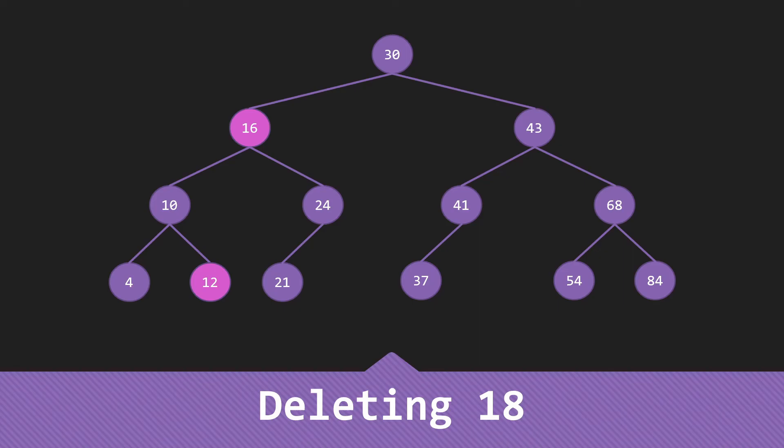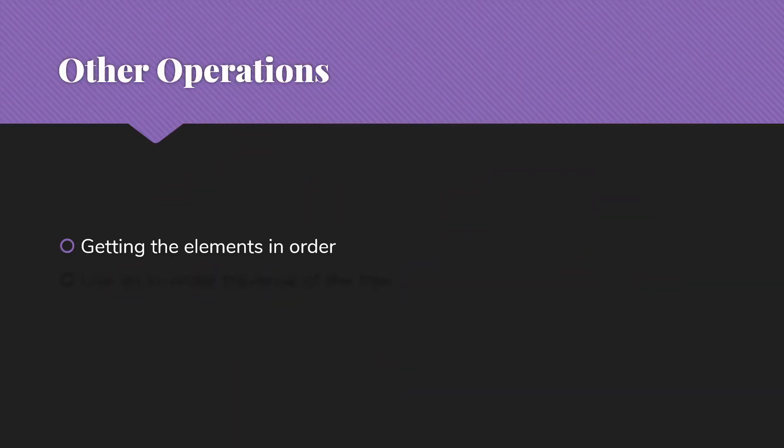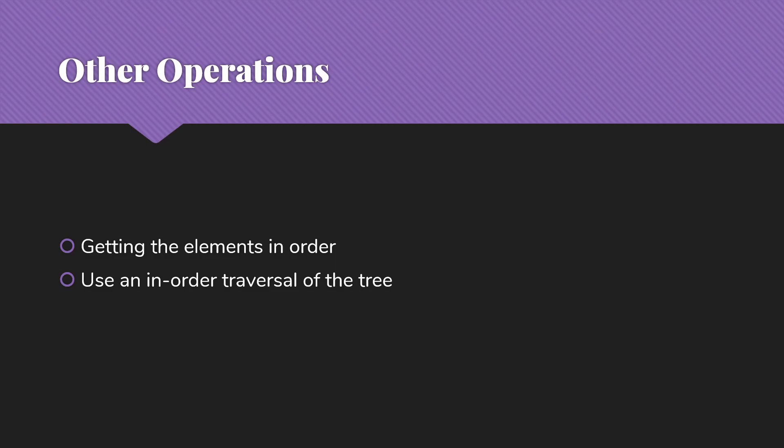There were a few other operations we were interested in. One would be simply getting the elements in order. To do that, we're going to use our in-order traversal of the tree, and that will give us all the elements in order according to the sorting used to organize the tree.